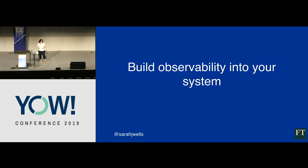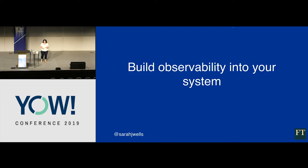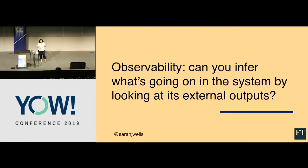You need to build observability into your system, because how you debug things changes a lot when you move from monolith to microservices. In the monolith, I could get the code locally, spin up the system, and step through debugging. You can't do that now — it's too complicated, and the system on your developer laptop is never going to be the same as production. In some cases, you're using tools only available in the cloud. So you need to change the way you develop to allow you to know what's going on when things go wrong. Observability is about inferring what's going on in the system by looking at its external outputs — generally metrics, logs, and monitoring.